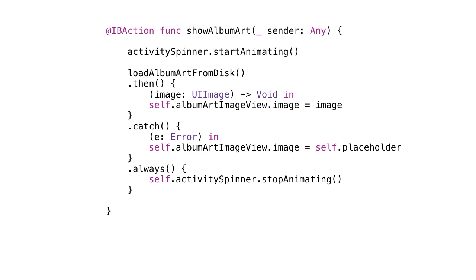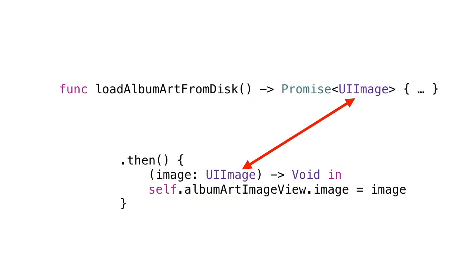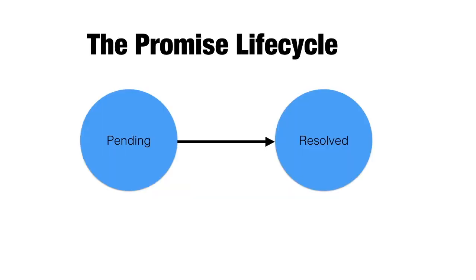We've got this promise object coming back and we're calling methods on it. Let's have a closer look at what this promise object conceptually represents. A promise is connected with some task that's underway. Every single time we call load-album-art-from-disk, what we get back is a new instance of a promise connected with that particular execution of the task. What it means is: I promise to give you a UIImage. The type comes from the type in angle brackets — in this case a UIImage. You saw that our success handler then took an image as its parameter, which comes directly from the type of the promise we're dealing with. If instead we had a Promise<String>, our then handler would have a string parameter instead.